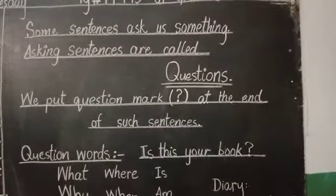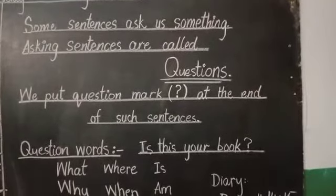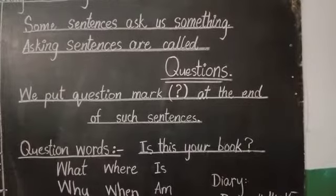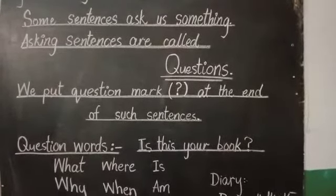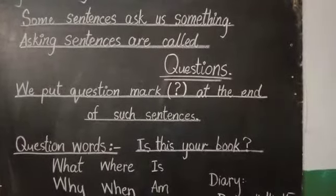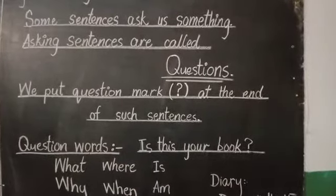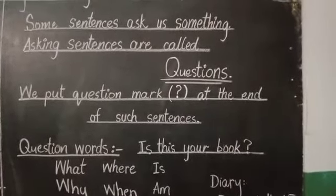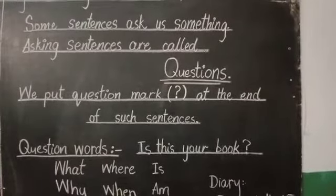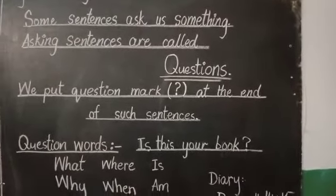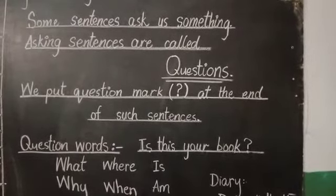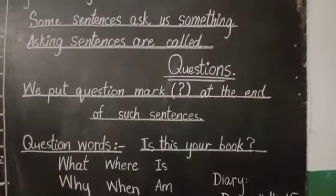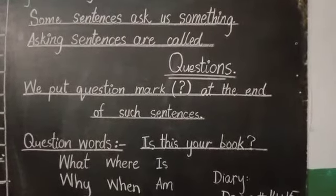Like, if I ask you: 'Is this your book?' — kya yeh aapki kitaab hai? To ismeh jo simple sentence hota hai, usmein 'this' hum pehle likhte hain, phir uske baad 'is' likhte hain. 'This is your book' — ismeh hum full stop mark karte hain, joh humne pehle lesson mein sikha tha. But when it becomes a question, 'is' comes before 'this'.